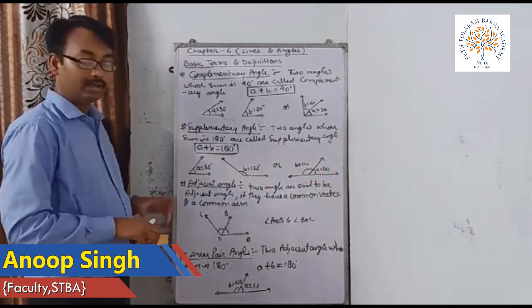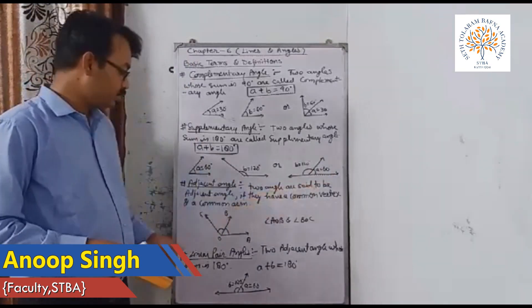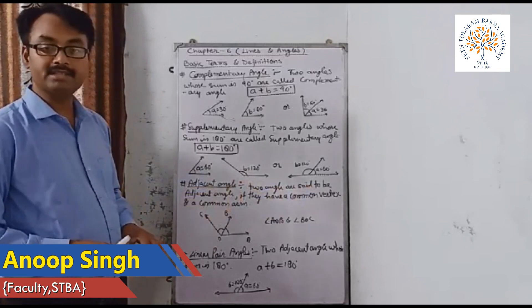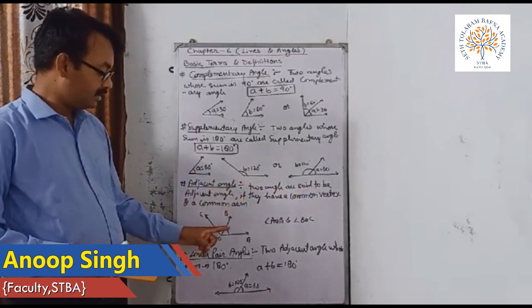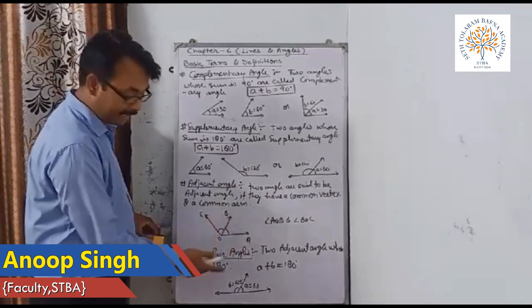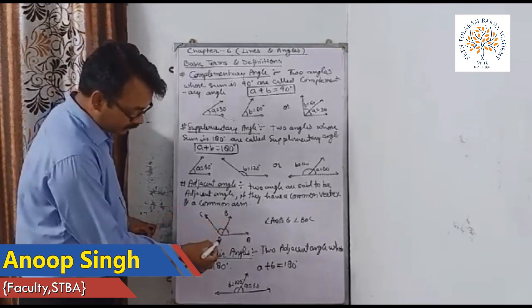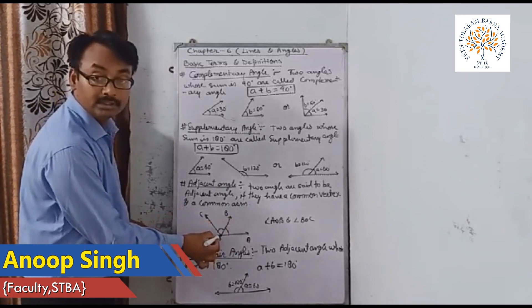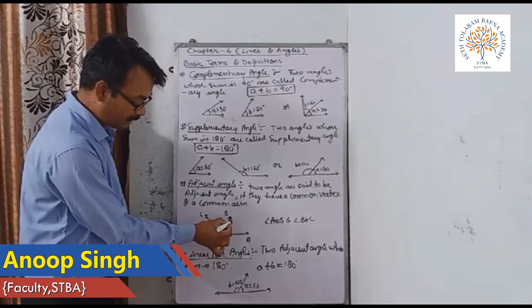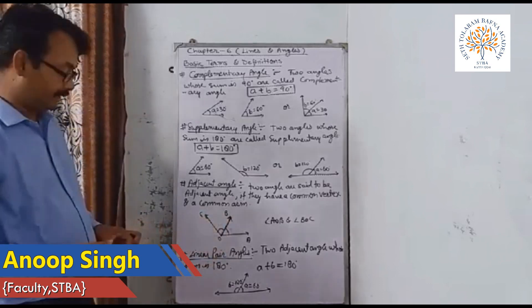Adjacent angle: two angles are said to be adjacent if they have a common vertex and a common arm. For example, angle AOB and angle BOC — the common vertex is O, and arm OB is common in both angles. So these are adjacent angles.